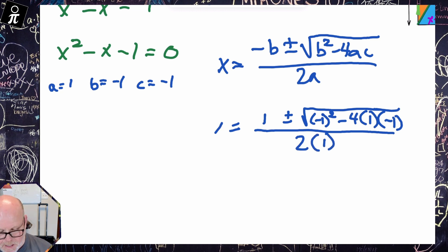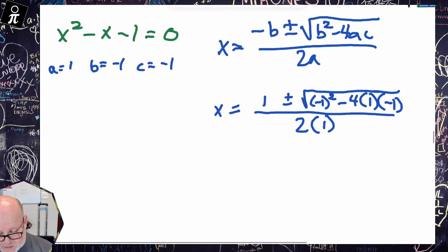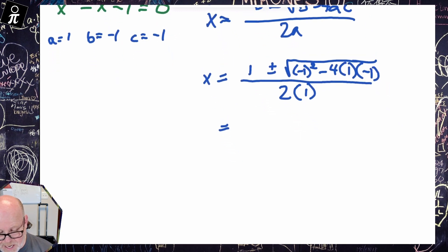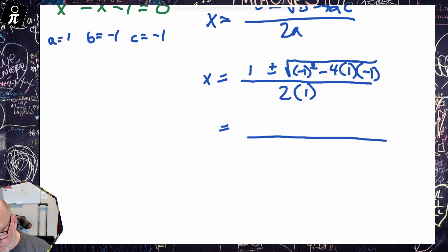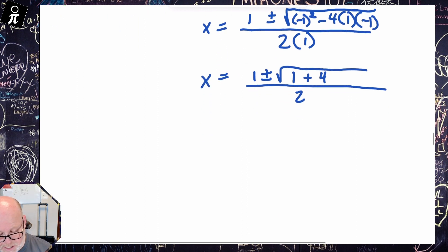All right, and now let's just do some fancy algebra here. So we've got one plus or minus the square root of five. And this is going to be one minus, it's going to be plus four, all over two.